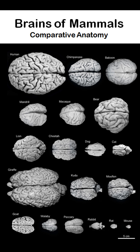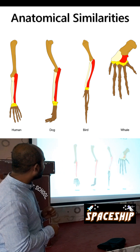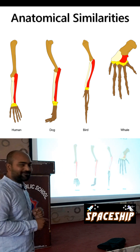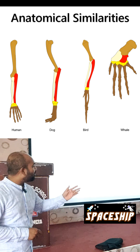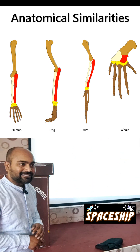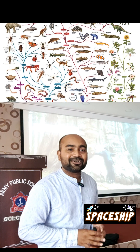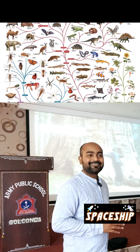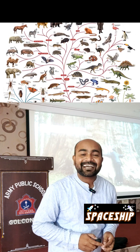This is crazy, right? And look at the anatomical similarities of the hand of a human, dog, bird, and a whale — the same structures, because we all have one common ancestor. All of the life on the earth came from one common ancestor.